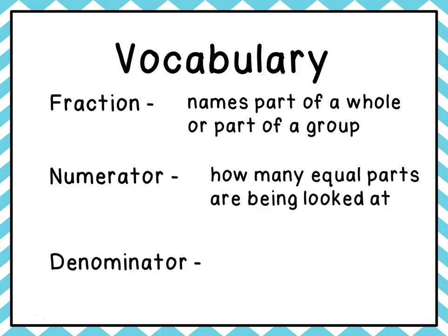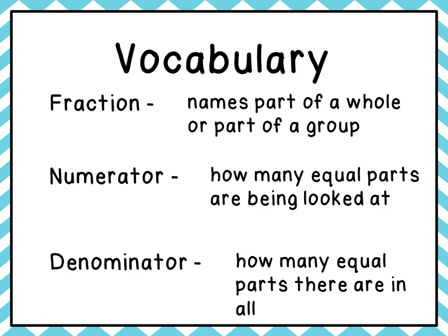The last word we want to look at is denominator, and the denominator is how many equal parts there are in all. Going back to my example, there were seven people in my family and two of them are girls. So the fraction would be two-sevenths — two being the number of girls, seven being the number of people in all. The two is the numerator and the seven is the denominator.